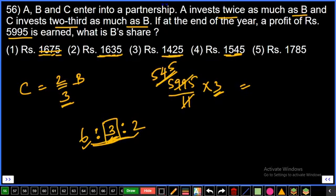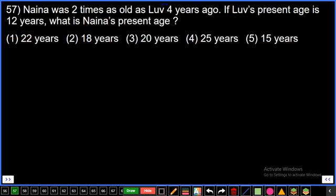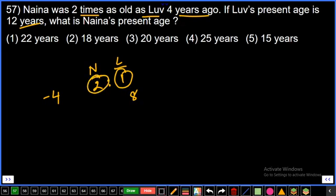Question number 57: Naina was two times as old as Love four years ago. If Love's present age is 12 years, what is Naina's present age? Four years ago, Naina was two times as old as Love. If Love was one part, Naina was two parts. Four years ago, the ratio was 2:1. Love's present is 12 years, so four years ago Love's age was 12 minus 4, that is 8 years. One part value equals 8. Two parts equals 16. Naina's age four years ago was 16, so Naina's present is 16 plus 4, that is 20. Third option.